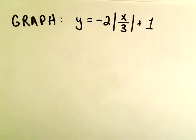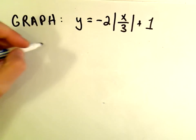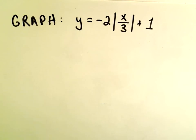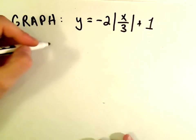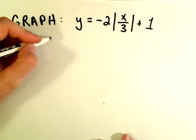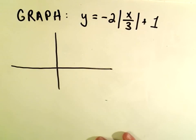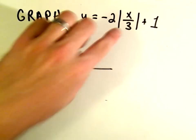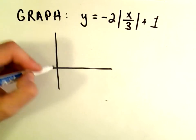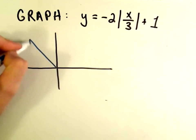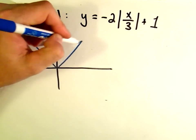For this first one here, y equals negative 2 times the absolute value of x over 3 plus 1. Basically what I'm going to do is, when I do these, the way I think about them is I kind of graph them in pieces. You want to kind of recognize the basic graph that we're using here. The thing that sticks out to me is the absolute value. And if you'll recall, the absolute value kind of looks like a v.